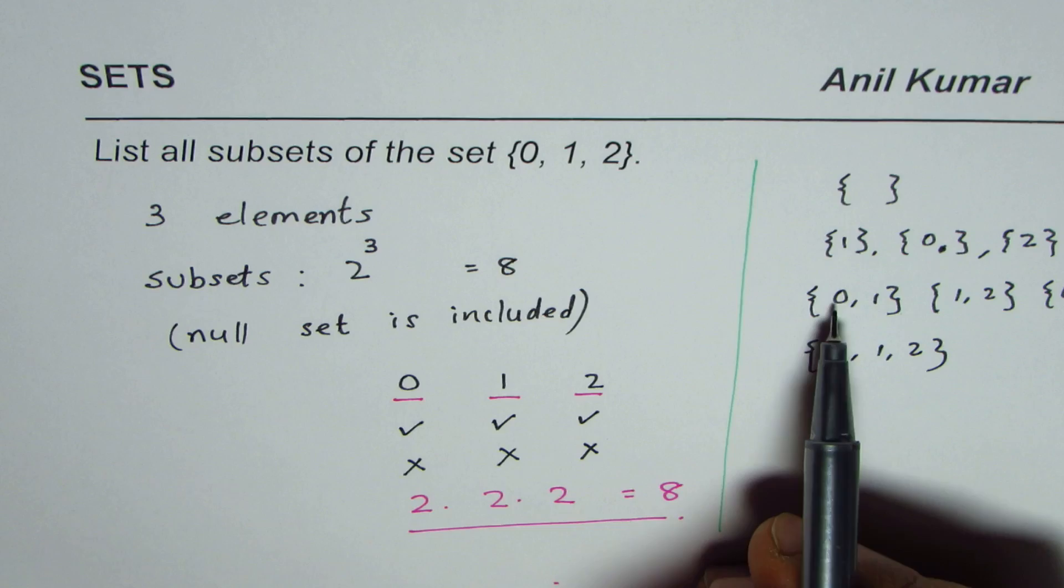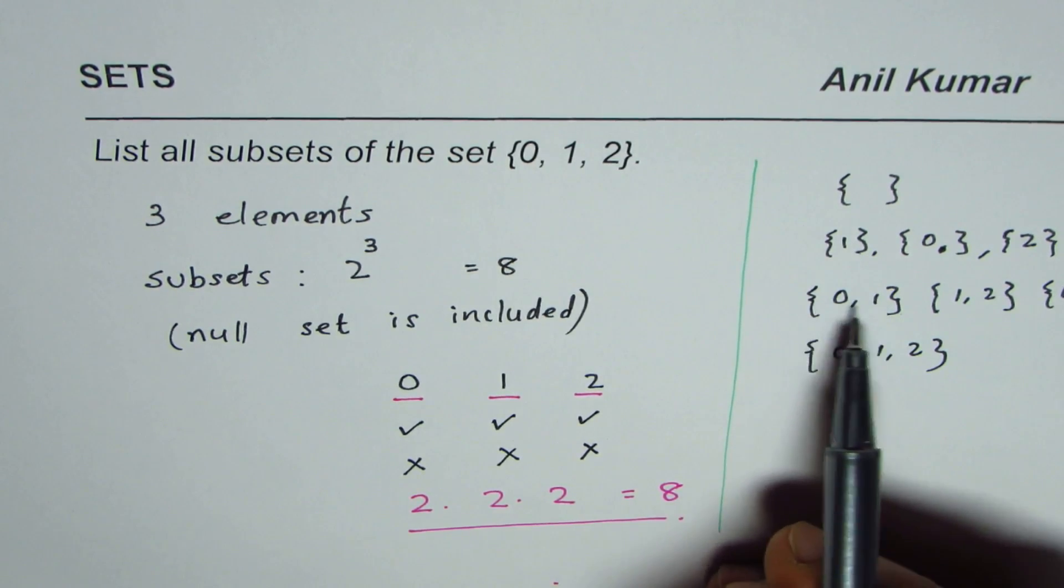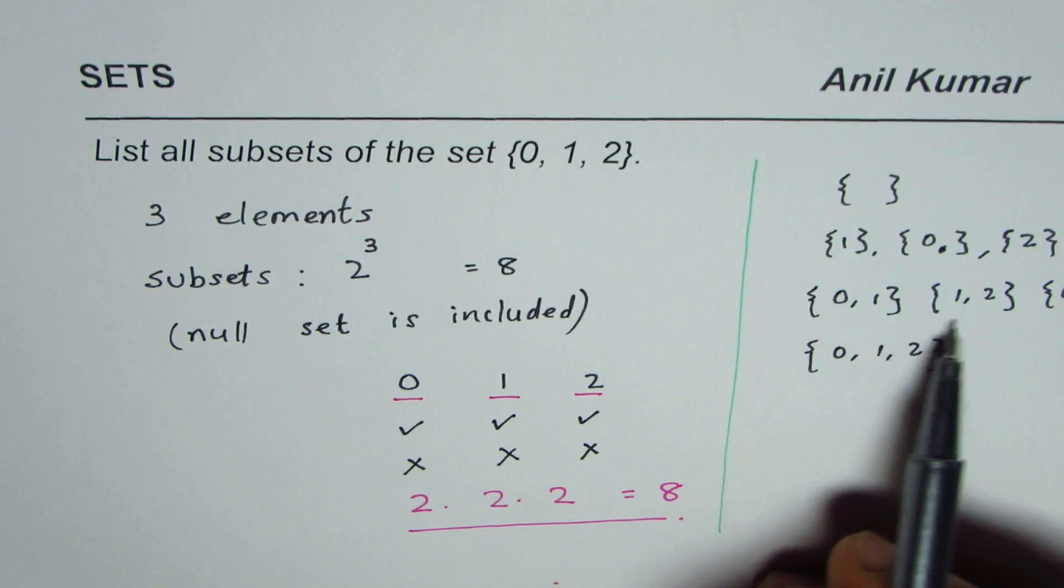Remember one thing: {0,1} and {1,0} is the same set with the same elements, and therefore we will not count those separately.